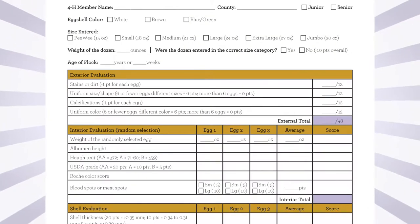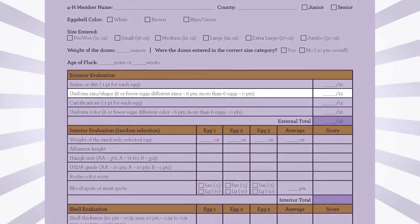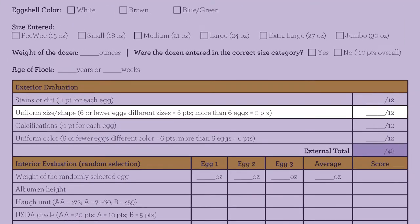Points will be deducted for eggs that are not uniform in size or shape. If all the eggs in a dozen are uniform in size and shape, 12 points are awarded.